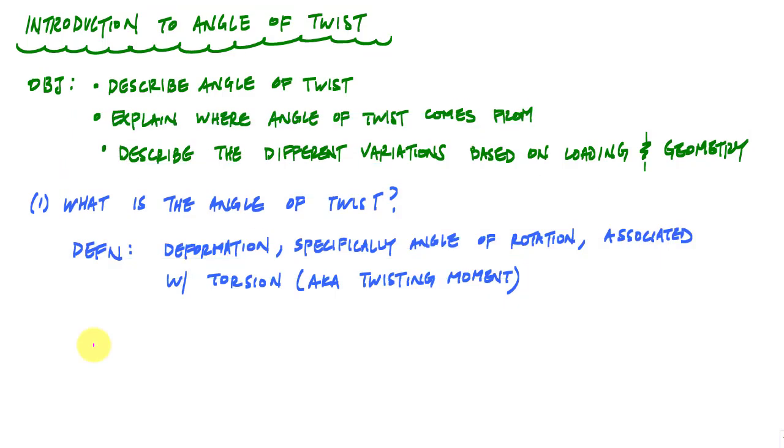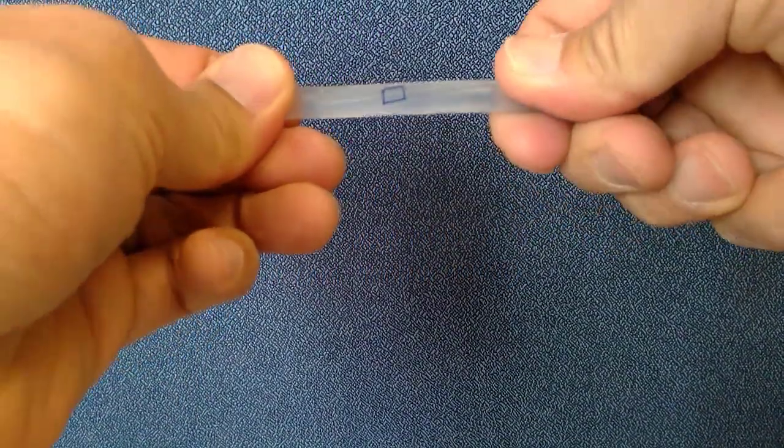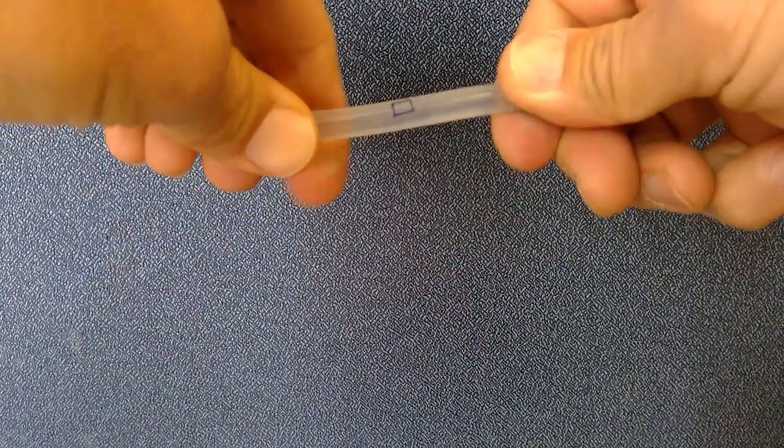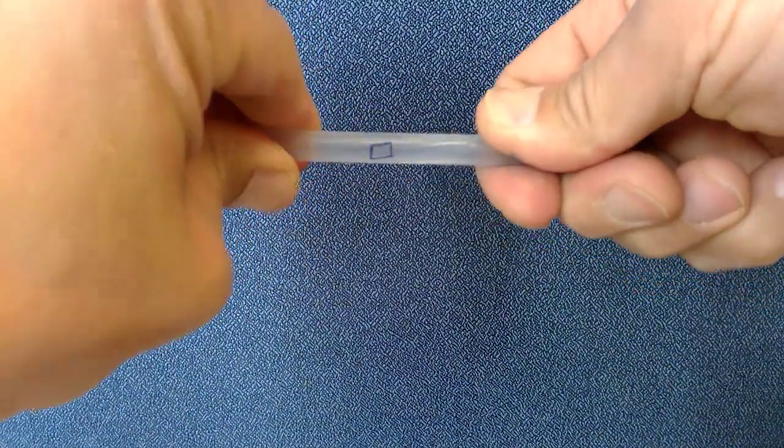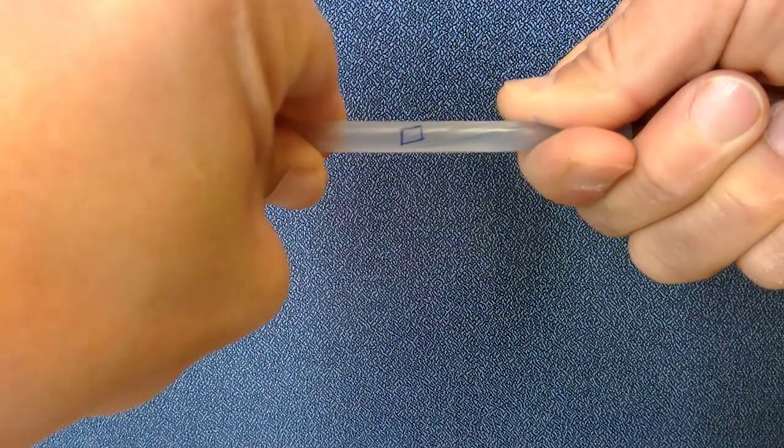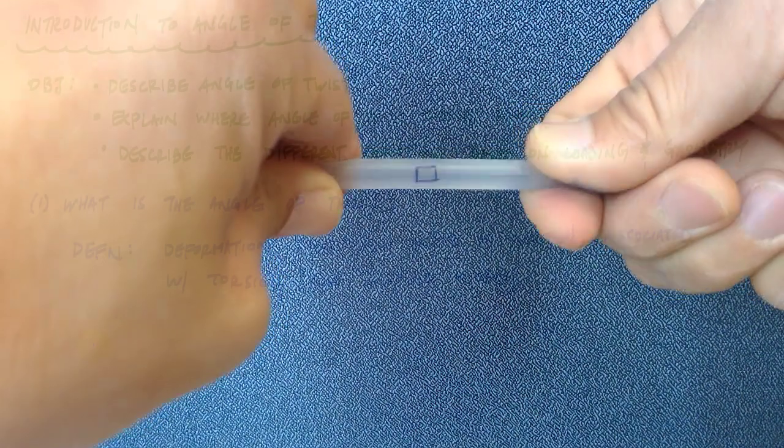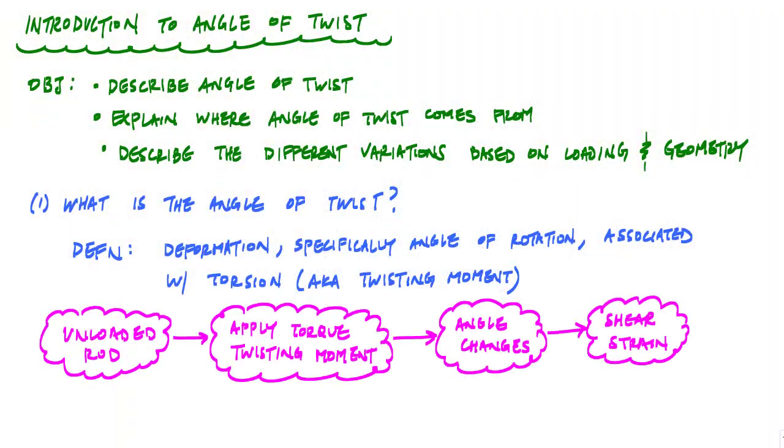All right, so let's look at deformation before and after. I've got this rod here with this rectangle initially drawn to it. It's unloaded. Then I apply an external torque, and I notice that this rectangle changes angle. And that angle implies shear strain. When we notice these angle changes, we associate them with shear strain.